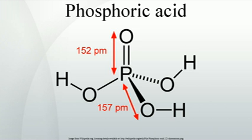Phosphoric acid is used in dentistry and orthodontics as an etching solution to clean and roughen the surfaces of teeth where dental appliances or fillings will be placed. Phosphoric acid is also an ingredient in over-the-counter anti-nausea medications that also contain high levels of sugar, glucose and fructose. This acid is also used in many teeth whiteners to eliminate plaque before application.